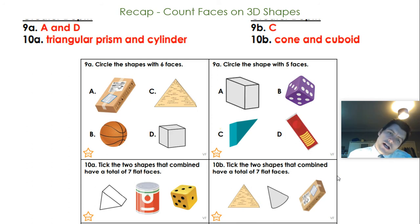Great stuff if you've got A and D as 6 faces, so the cuboid and the cube. And then C is our triangular prism that we've got for C, which has 5 faces. The triangular prism and the cylinder combined, so the 5 flat faces of the triangular prism and the 2 flat faces of the cylinder. And then there's the additional curved surface for the 7. And then for 10B, we've got the cone, which has 1 flat face, and the cuboid, which has 6. So 1 add 6 makes 7. Well done if you've worked through that, okay?